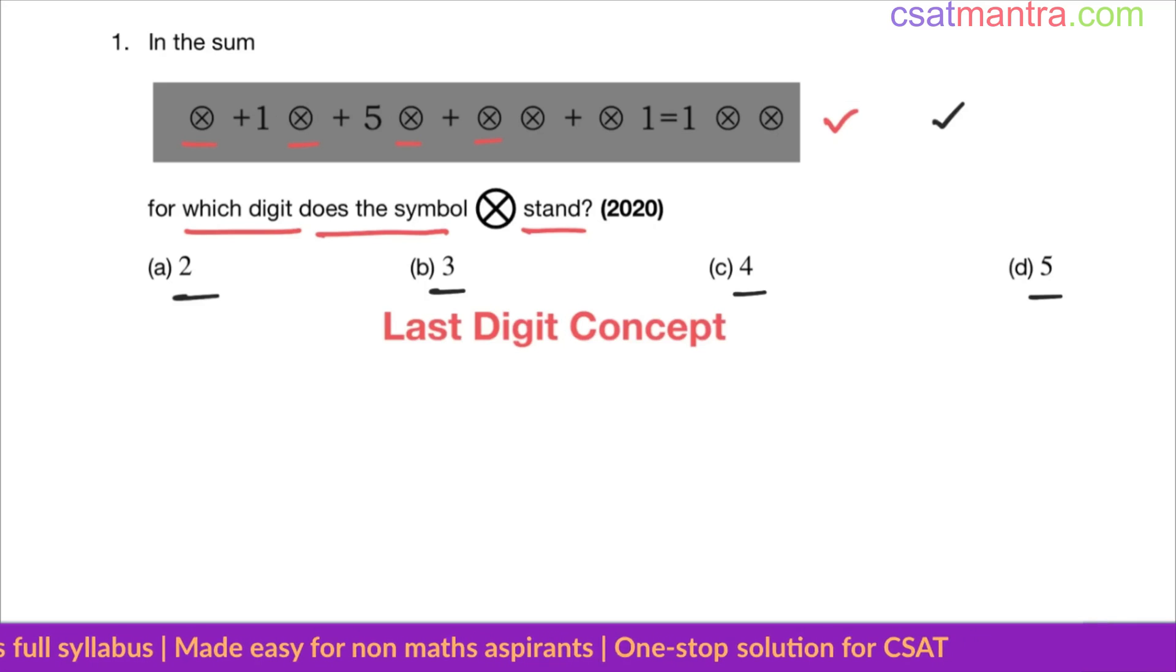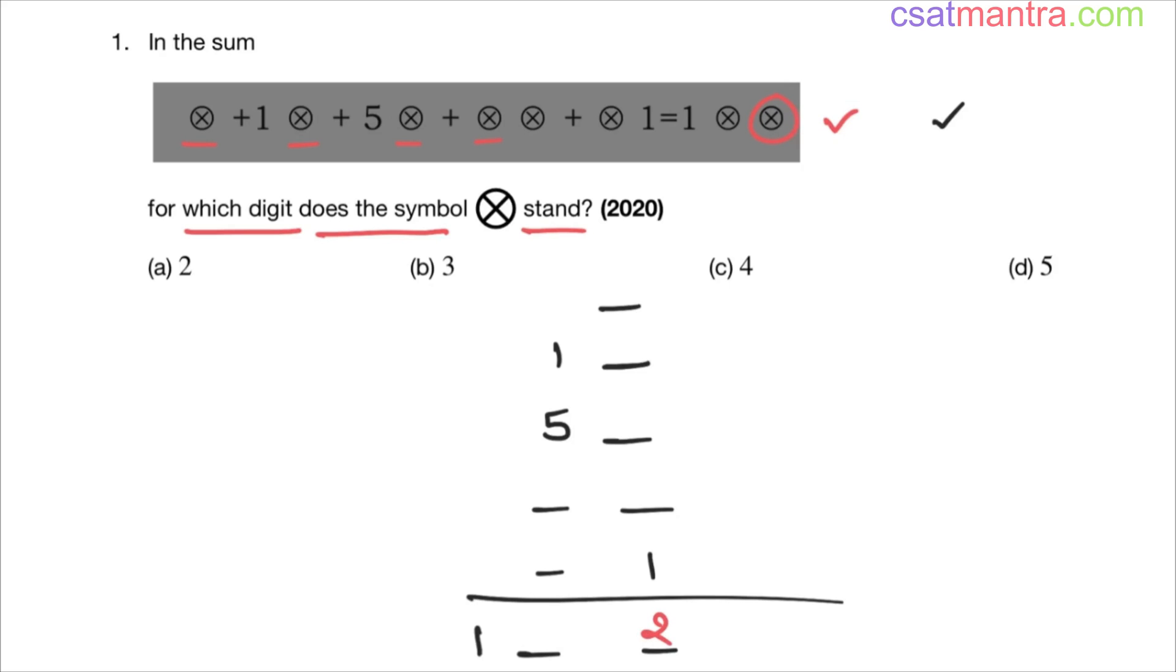Rather, here we'll be making use of the last digit concept - very easy. Using this you can arrive at the answer very quickly. Here we substitute 2 first. We are concerned with last digit only in every number. So 2, 2, 2, 2. Now let's add last digits: 8 plus 1 is 9, so we should be having 9 here, but we have 2. That means this is incorrect.